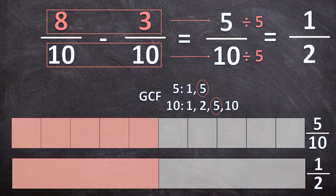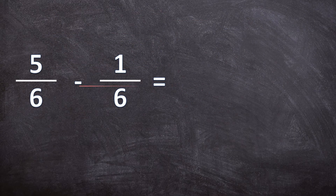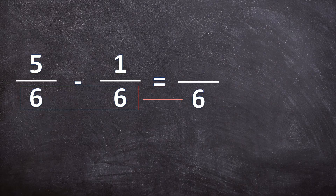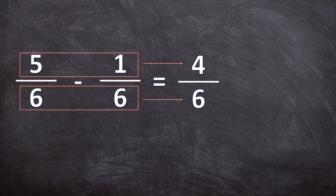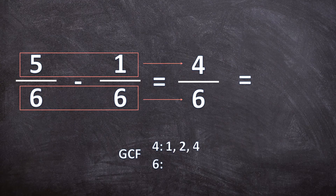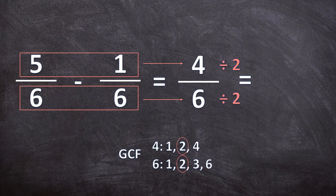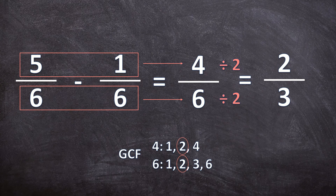Lastly, one example without any pictures. Here we have 5 over 6 minus 1 over 6. Both denominators are 6, so the denominator in the answer is 6. For the numerator, we subtract 1 from 5 to get 4. But it's not simplified yet, so we get the greatest common factor for 4 and 6. Factors of 4: 1, 2, and 4. Factors of 6: 1, 2, 3, and 6. The greatest common factor is 2. Dividing both by 2: 4 divided by 2 is 2, and 6 divided by 2 is 3. So 2 over 3 is our final simplified answer.